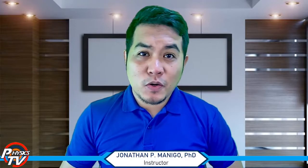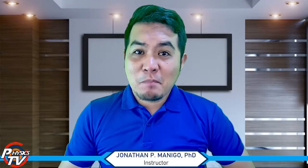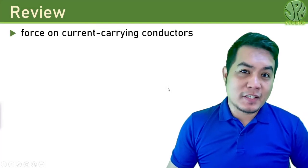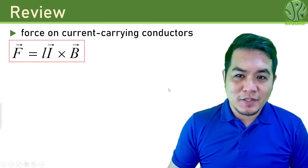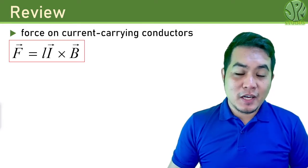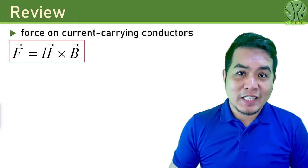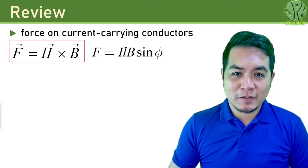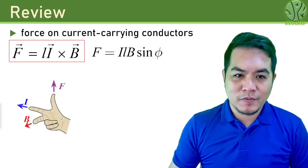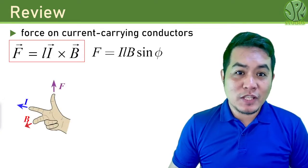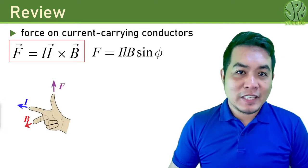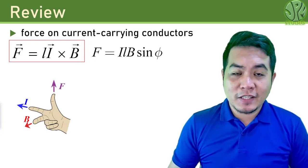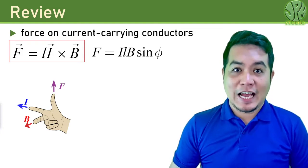Hello, and welcome back to the course on Physics for Engineers. This is now the last lesson for Chapter 13, Magnetostatics. So let's first review. In the previous lesson, we discussed the force on current-carrying conductors — it's the cross product of the current and the external magnetic field, with magnitude ILB sine phi. This follows the right-hand rule: if the current is your pointing finger and the magnetic field is your middle finger, then your thumb gives the direction of the force, I cross B.